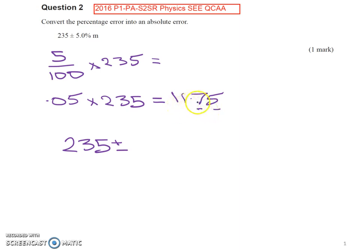And so when we look at this 11.7, we need to cut off our value here. And therefore because of the 0.7 being greater than 0.5, we round it up. And so therefore we have an answer of 235 plus or minus 12 metres.